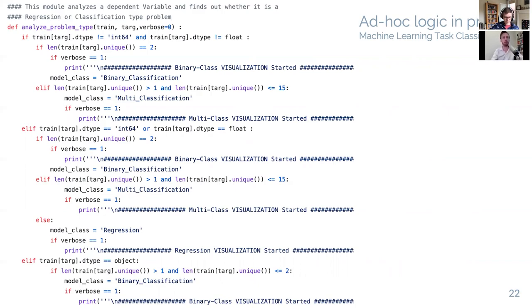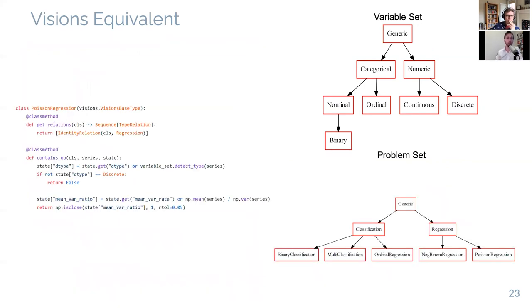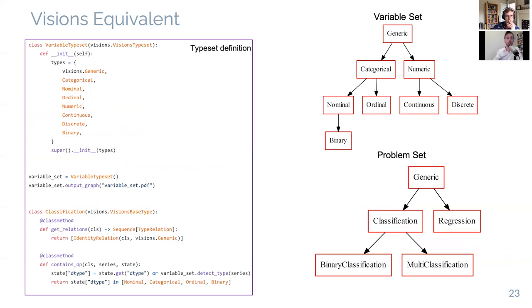In the next slide, we see the Visions equivalent of this code. So, what we would do in Visions is make two typesets. The variable typeset here, denoting the statistical set we've seen before, but with the addition of a binary type for binary classification, and define the other type as being the typeset as being the problem set. And it's quite easy to map logic from the variable set to the problem set to actually solve a problem. So, on the left, we see the code. One of the benefits here is that it's easy to reason about and to test. But in the next slide, we also see that it's easy to extend.